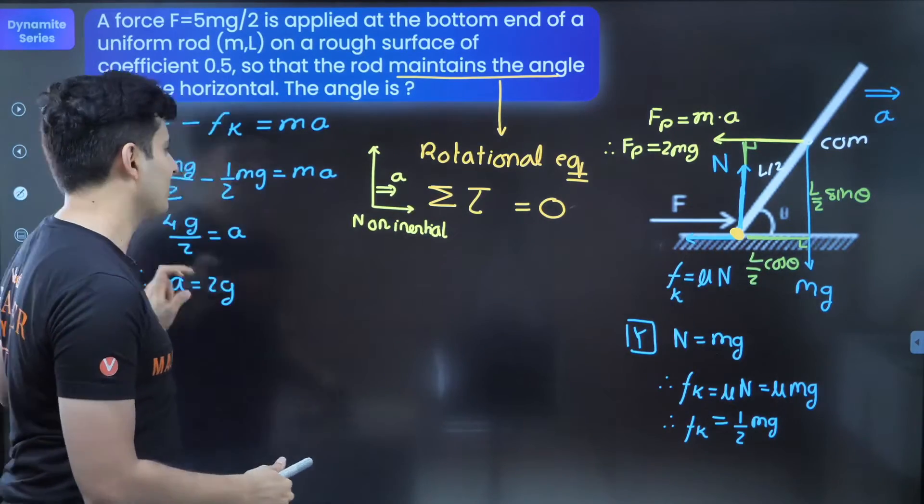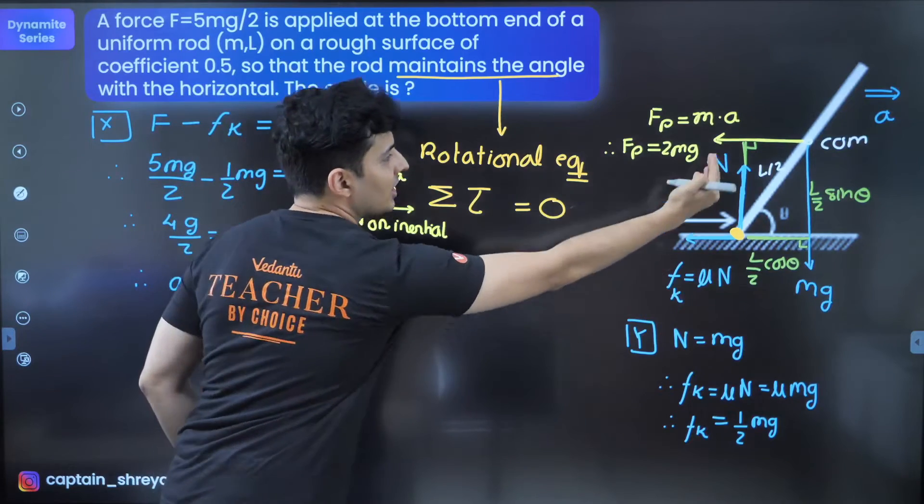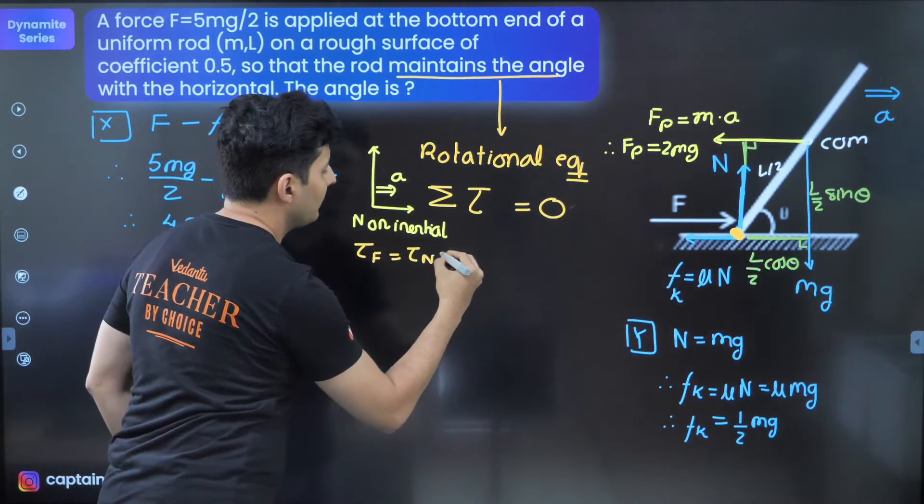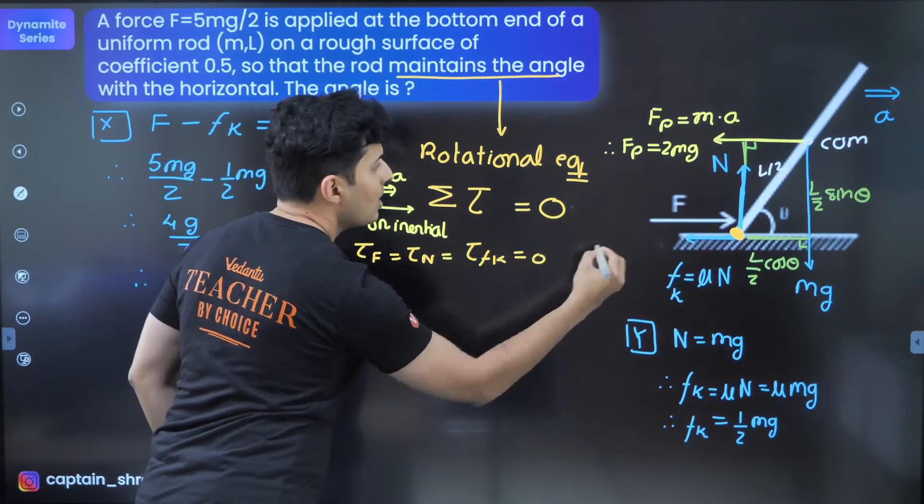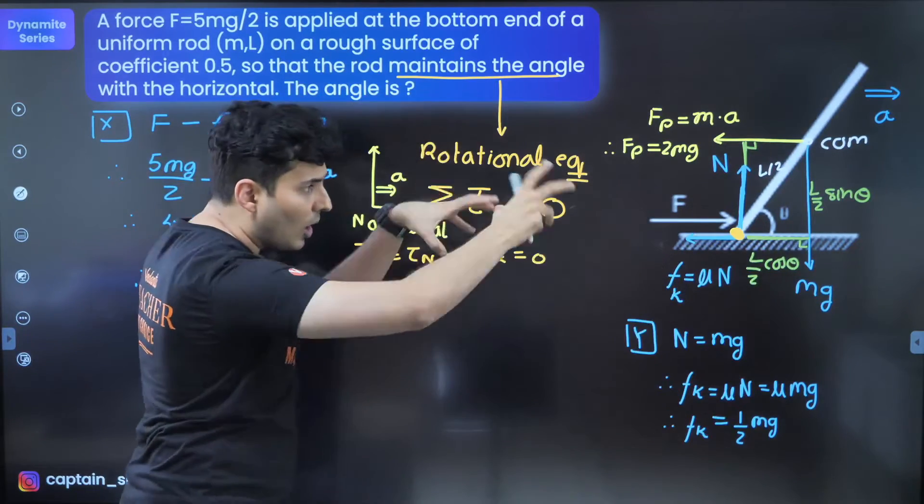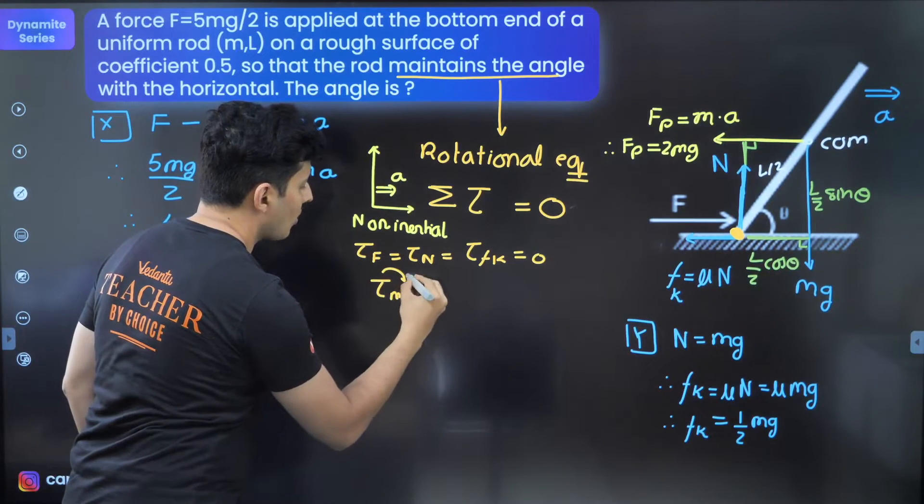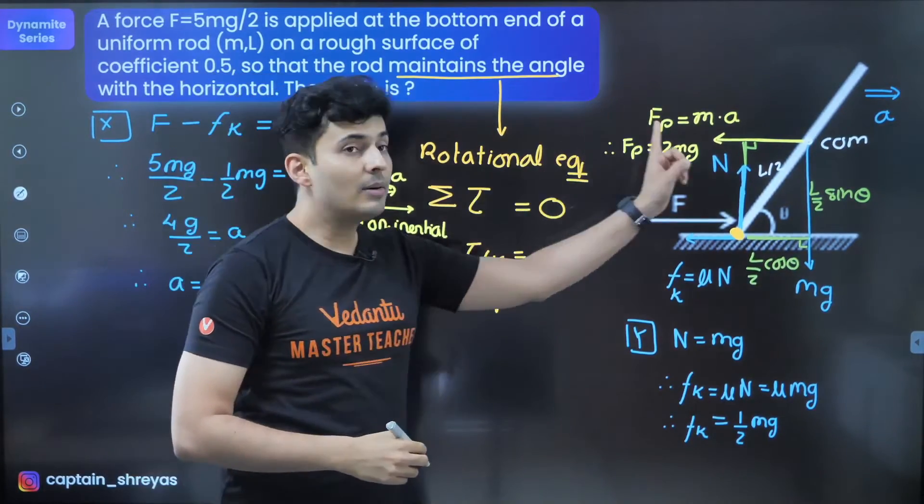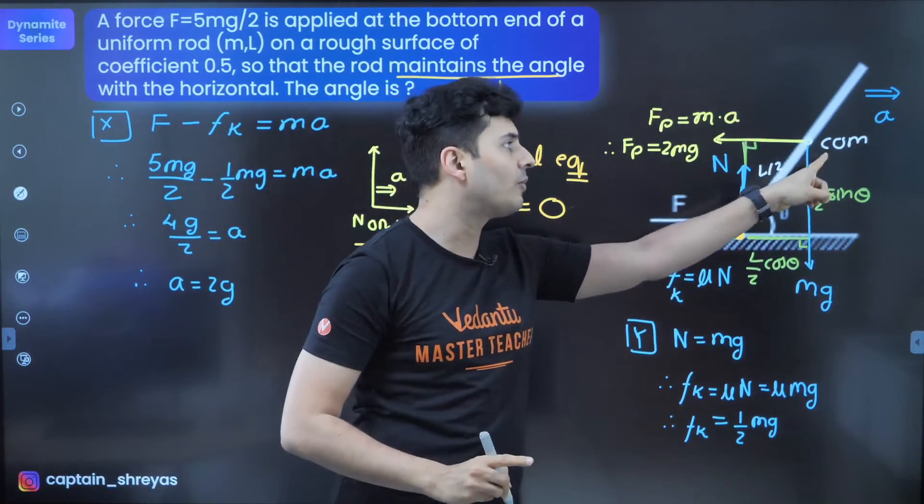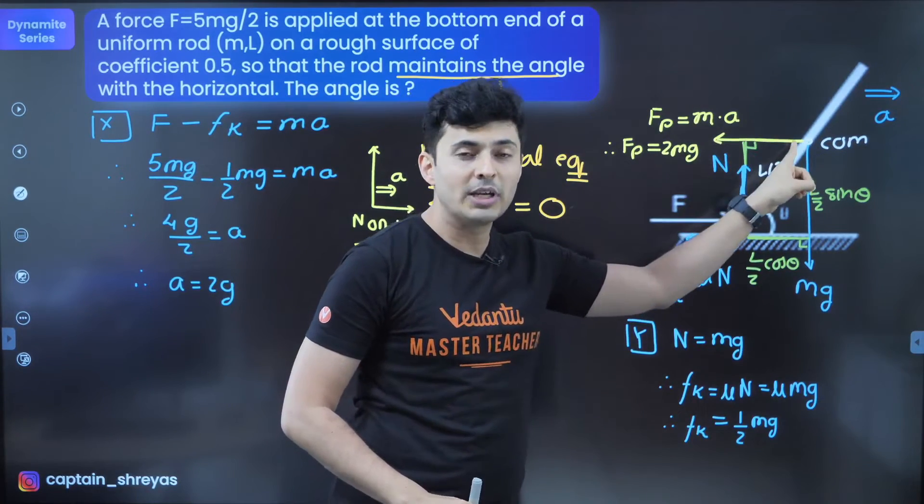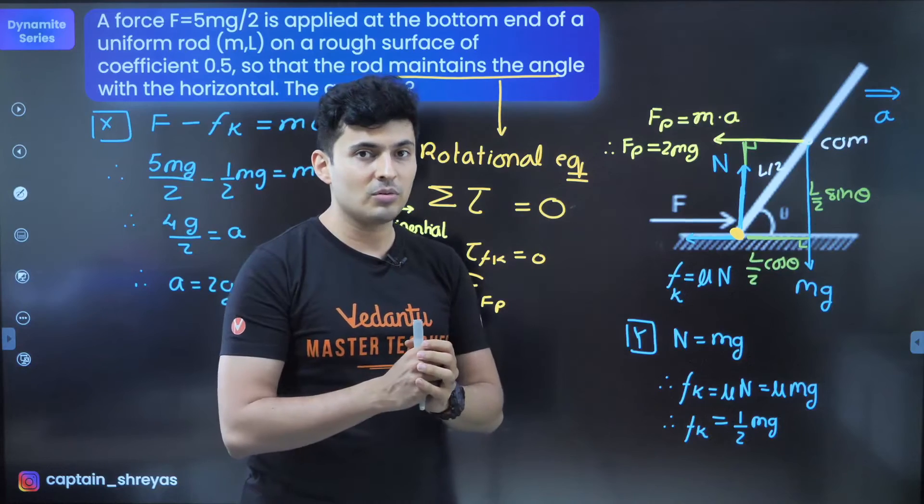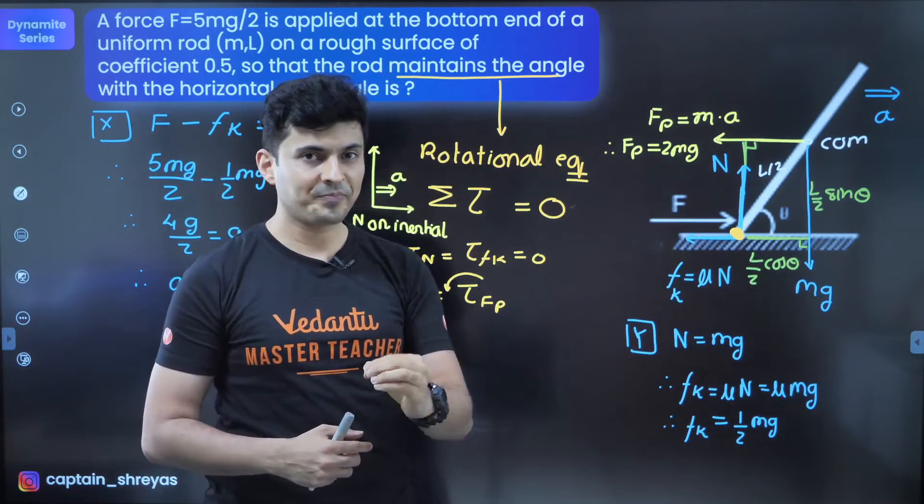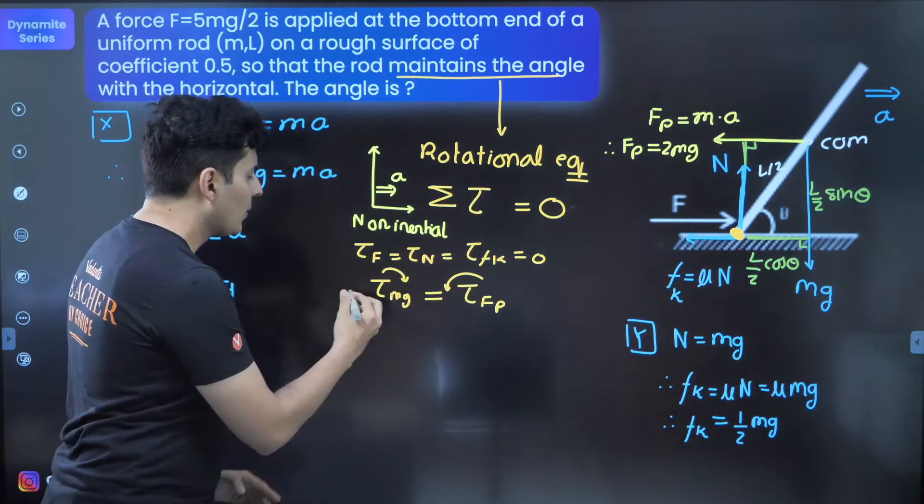Now you know why this problem has actually come in dynamite series. Let's start with the equations. Torque by force, friction and normal is zero. Don't even bother about it. The torque by the gravity is clockwise. This will be balanced by the torque of the pseudo force, which will be anticlockwise. Keep in mind, pseudo force always acts from the center of mass. That's the reason why I have shown this arrow mark from here. A lot of people do not know or get confused. Always remember pseudo force acts from the center of mass of that system, just like gravity.